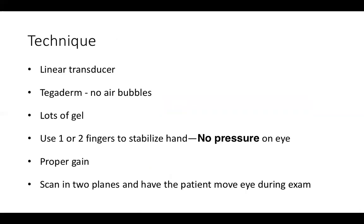Let's discuss proper technique in performing this scan. We're going to use a low-frequency linear transducer because the eye is a very superficial structure. You can use a tegaderm if you wish — if you do, make sure there are no trapped air bubbles underneath that would impair your ability to scan. Use lots of gel and make sure you stabilize the linear transducer with one to two fingers, either your pinky or your ring finger, so if the patient moves their head you minimize the chance of injury and the transducer moves along with them. Be very cognizant not to put any extra pressure on the eye, especially in cases of trauma.